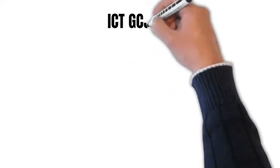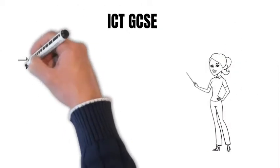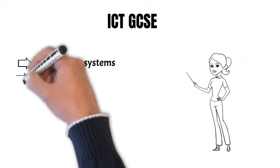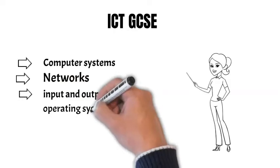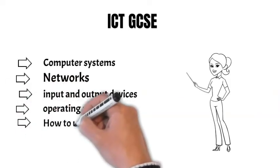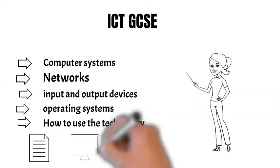Topics for the ICT GCSE include using computer systems, networks, input and output devices, operating systems, and how to use the technology such as creating Excel sheets and working with data.